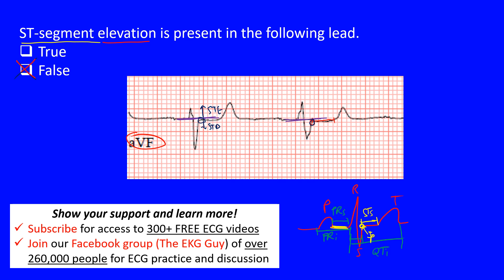So this is a false statement — no ST elevation is present here. If anything, we may have some ST segment depression. Remember: identify the J point at the end of the QRS complex, use the PR segment as your baseline, and assess for elevation or depression. That's the end of this lecture.